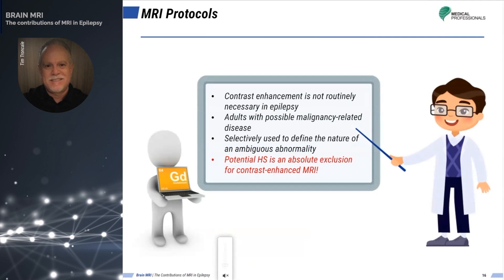Although contrast enhancement may be helpful in the initial assessment of adults with possible malignant tumor-related epilepsy, there is usually no need for routine contrast enhancement in patients with epilepsy. A still-ambiguous anomaly in unenhanced imaging could be a reason to use contrast. However, potential hippocampal sclerosis is an absolute exclusion factor for contrast in MRI.